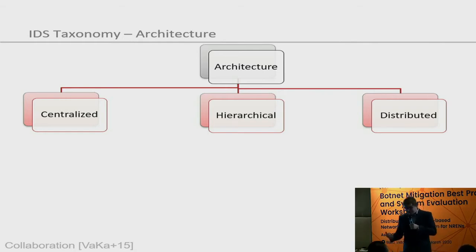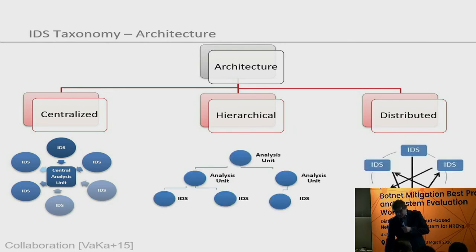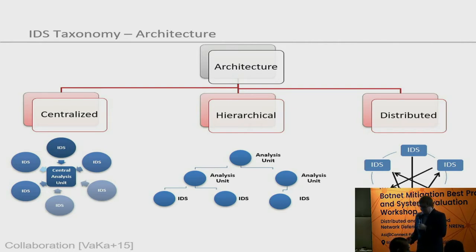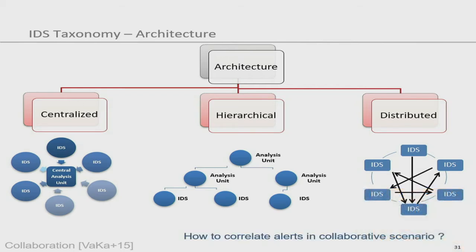IDS types can be host-based, network-based, or hybrid. Architectures can be centralized, hierarchical, or distributed. In distributed approaches with multiple equal intrusion detection systems, the key challenge is how to correlate alerts in a collaborative scenario. If there is an attack on the network, it will show up in multiple IDS simultaneously, and those alerts must be correlated — which is usually easier in centralized approaches.